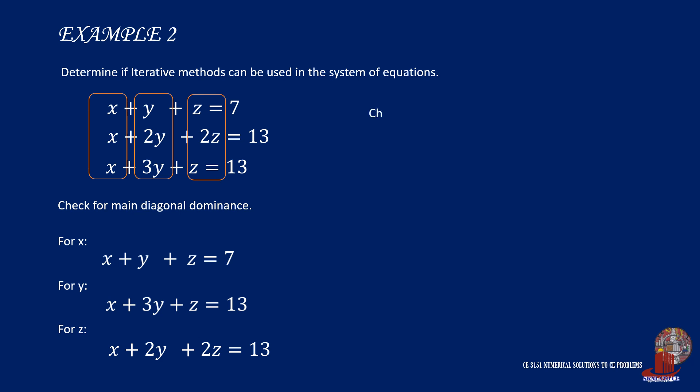After arranging the equations, we check each equation. From the equation of x, we can check that the absolute value of 1 should be greater than or equal to the absolute values of positive 1 for both y and z. And it turns out as 1 is greater than or equal to 2, which is false.